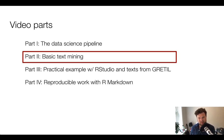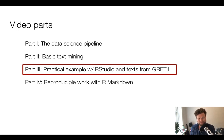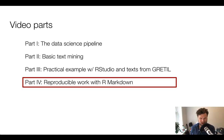In the next video I'm going to say a bit about the basic tools in R that are available to do text mining. Then in the third video I will walk through a practical example of how to use a program called RStudio to analyze texts from the GRETIL — the Göttingen Register of Electronic Texts in Indian Languages. And finally in the fourth video I'll say a bit about how to use these tools in a way that is transparent and reproducible, for yourself and your colleagues, with something called R Markdown.